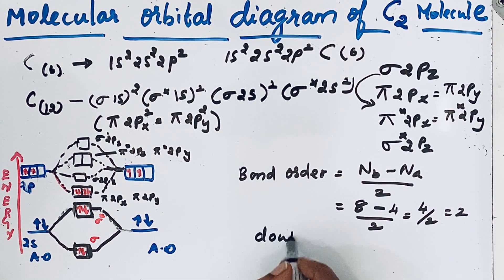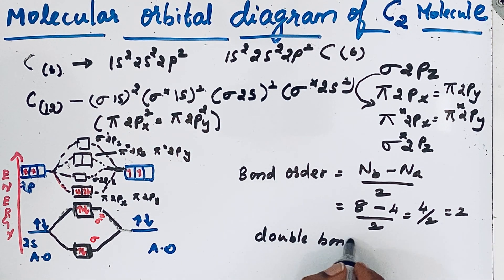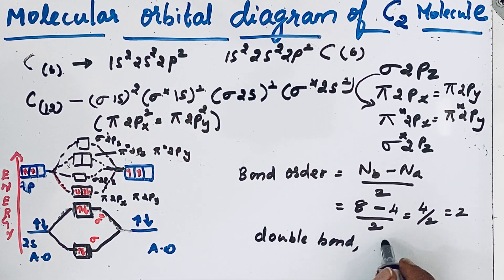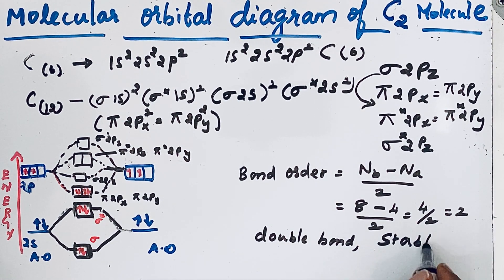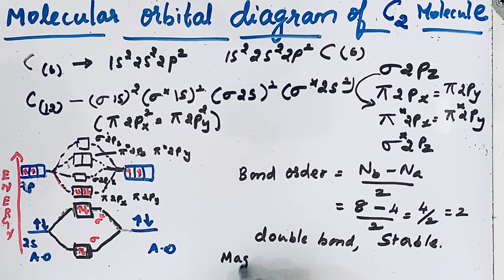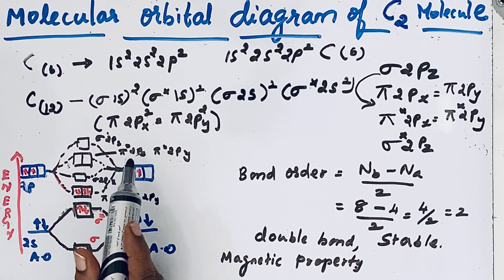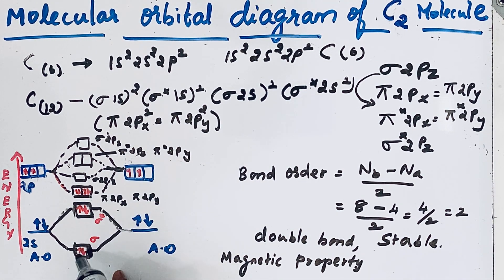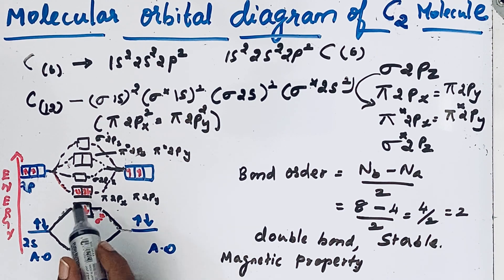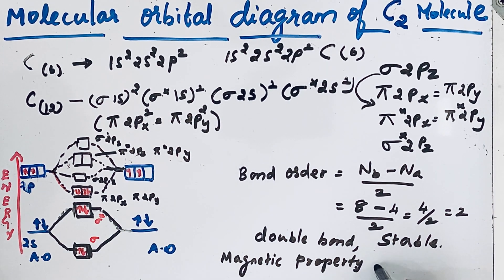There is a double bond, so the carbon molecule is very stable and can exist. Now for the magnetic property — looking at the bonding and anti-bonding electrons, there are no unpaired electrons; all electrons are paired. Therefore, the carbon molecule is diamagnetic.